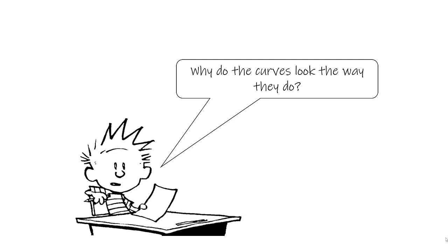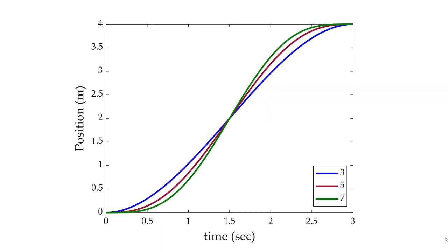Now, why do these curves actually look the way they do? Let's look at three curves: a blue curve, a red curve, and a green curve. Don't worry about the numbers 3, 5, and 7 for now. The blue curve is relatively straight, it gets curvier going to red, and the curviest curve is green. These are position versus time curves, and note that they all start at the same position and end at the same position.